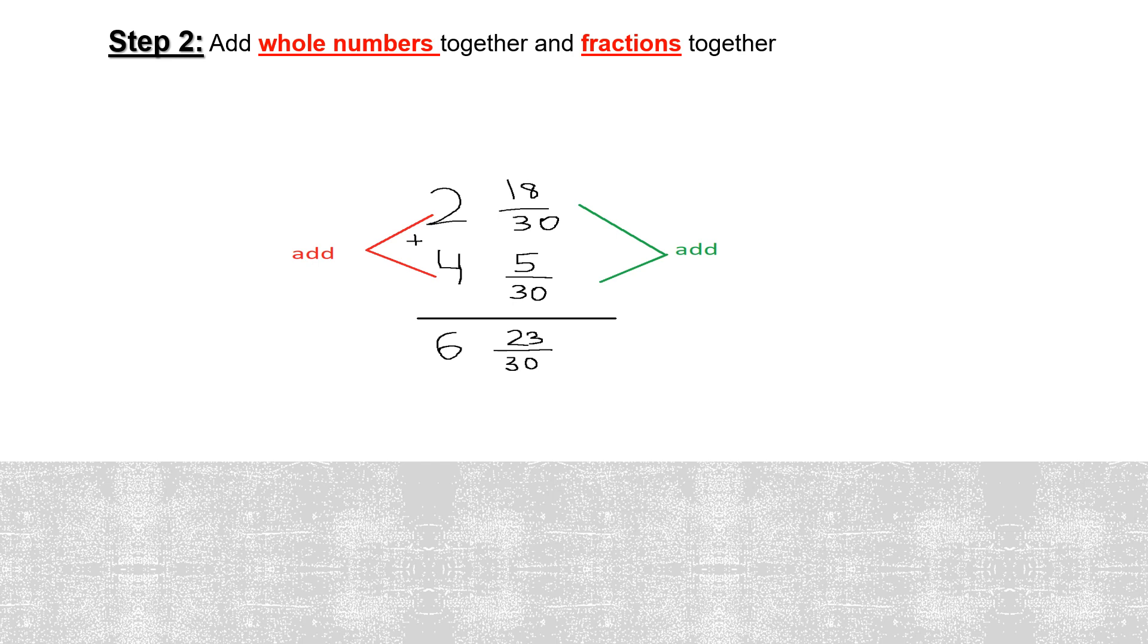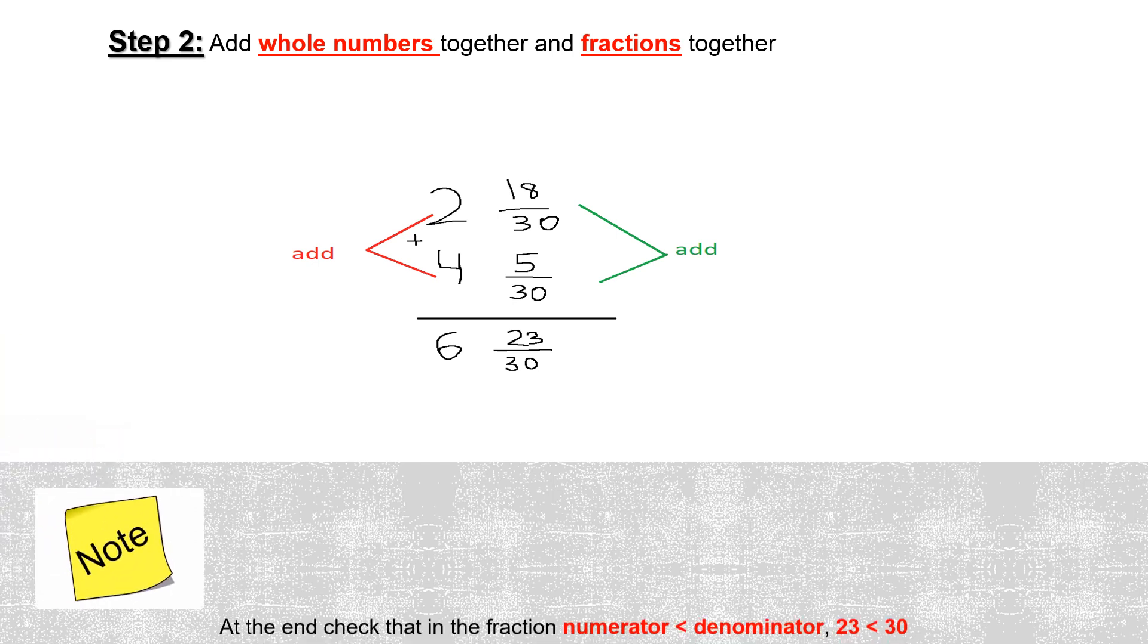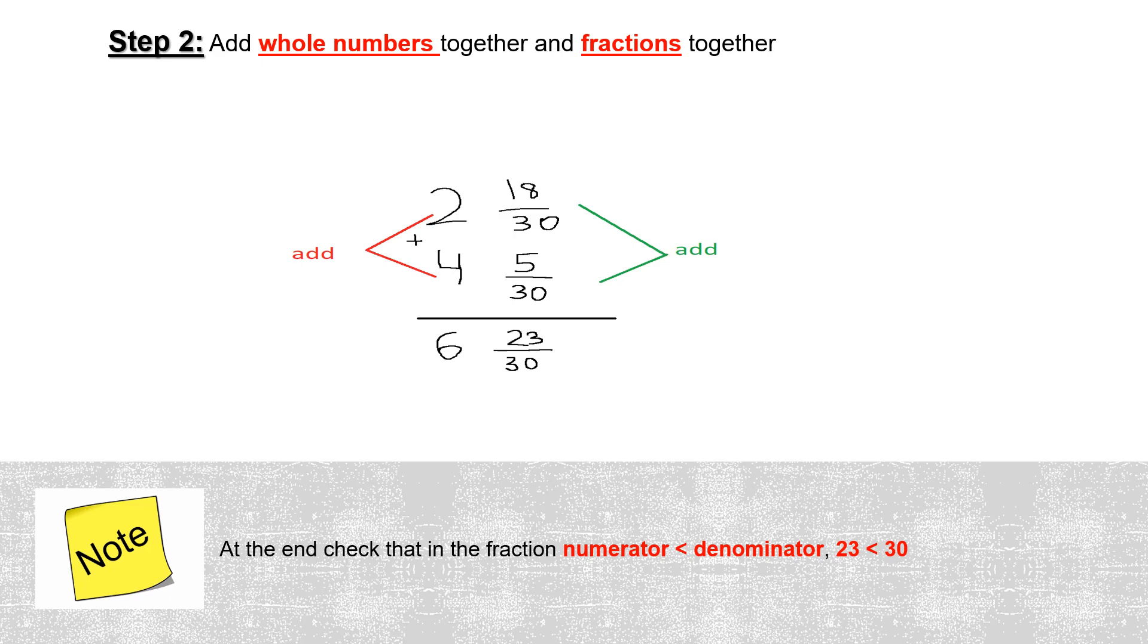At the end of your addition operation, note that your numerator should be less than the denominator in the fraction. In our example, 23 is less than 30. So, our final result or answer is 6 and 23 over 30.